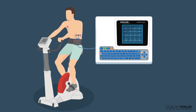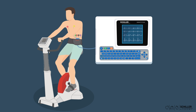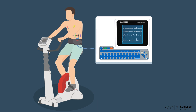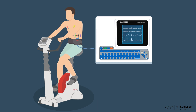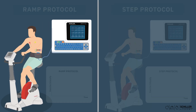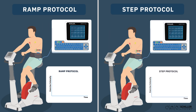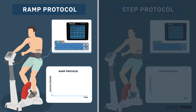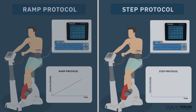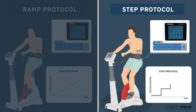In an exercise ECG, the patient is attached to an ECG machine via electrodes. But in contrast to a resting ECG, the patient walks or runs on a treadmill, or pedals on a stationary bike. The intensity of exercise gradually increases either in a ramp or step protocol. In a ramp protocol, the intensity rises by continuously increasing resistance or speed. In a step protocol, every few minutes the intensity increases by a certain step.